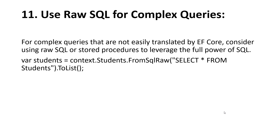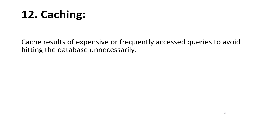The eleventh tip is to use raw SQL for complex queries. For complex queries that are not easily translated by EF Core, consider using raw SQL or stored procedures to leverage the full power of SQL. You can do this in your code by using FromSqlRaw() to execute raw SQL queries within Entity Framework Core.